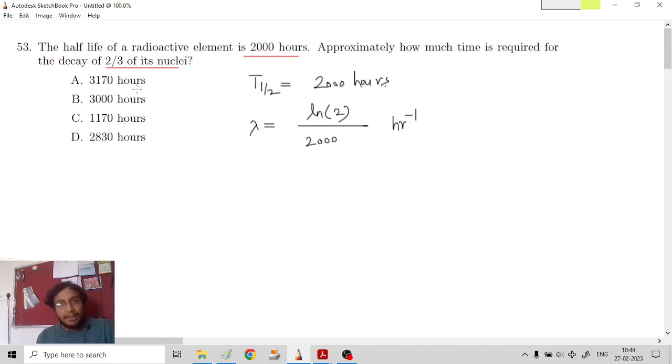Next, they want us to determine the time in which two-thirds of its nuclei will decay. Suppose N_0 is the initial number of nuclei. And we need to determine the time t. Let us say after time t, how much will be remaining? Two-thirds have been decayed, so N_0 by 3 will remain.